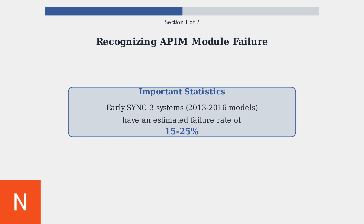It's important to recognize these symptoms early, especially if you own a Ford vehicle from 2013 to 2016 with Sync 3. These early systems have an estimated failure rate of 15 to 25%, making early detection crucial for preventing complete system failure.